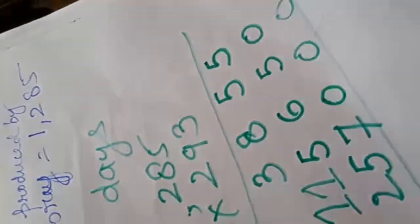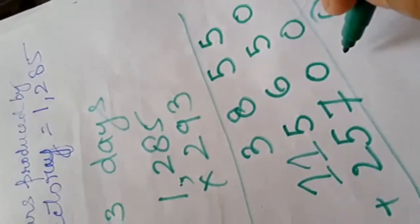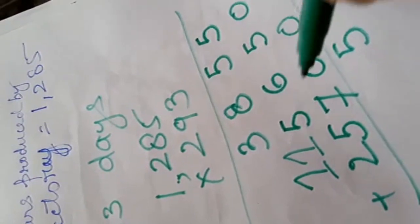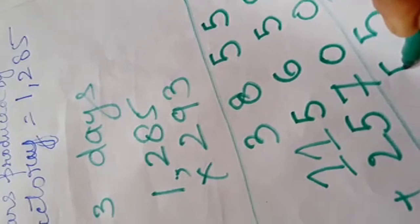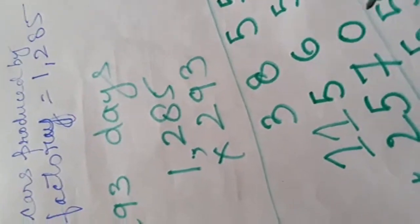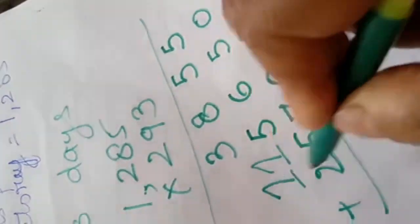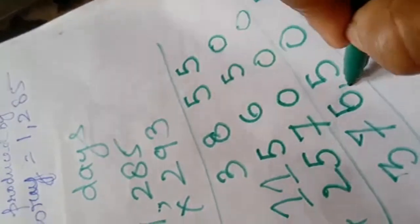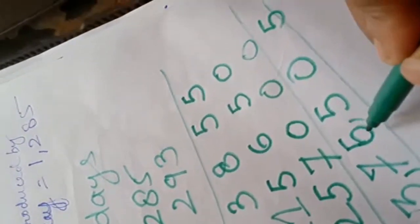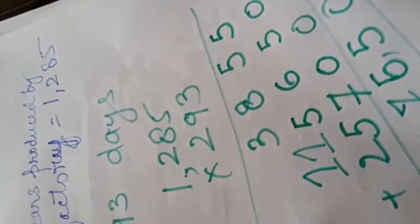Adding all these we get: 5 plus 5 is 10, write 0, carry 1. 8 plus 6 plus 1 is 15, write 5, carry 1. 7 plus 3 plus 5 plus 1 is 16, write 6, carry 1. 5 plus 1 is 6 plus 1 is 7. 2 plus 1 is 3. So the total answer is 3,76,505. This is the total number of toy cars.